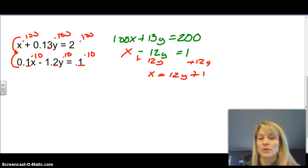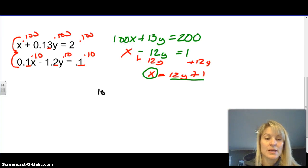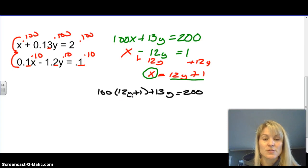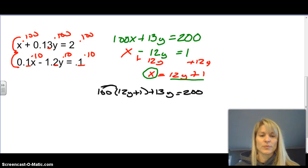So I am going to, wherever I see x, replace it with this, because it says it's equal to that. So looking at this top equation now, I have 100 times x. So instead of putting in x, I'm going to put in 12y plus 1. Then I'm going to keep with the equation 13y equals 200. The reason I do that now is I have only one variable. So when you only have one variable, you can solve for it. If you have two variables, you can't. So then we have to do the distributive property here. So that's 100 times 12. So that's going to mean 1200y plus 100 times 1, which is 100. And then we have 13y equals 200.